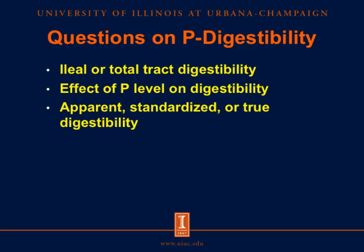Instead of measuring relative bioavailability, the digestibility of phosphorus can also be measured. It is not difficult to measure digestibility of phosphorus in feed ingredients; however, there are several questions that need to be answered. One is: should we measure ileal or total tract digestibility? Another is: what is the effect of phosphorus level in the diet on digestibility? And a third question is: should we use apparent, standardized, or true digestibility values for the most accurate feed formulation? I'll talk about all three issues and give examples of how to calculate digestibility.